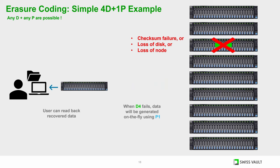The lost data chunk is automatically queued for regeneration. If the cause was a failed media, it is logged as failed and can be removed and replaced at a later time when convenient. This automated detection and compensation for hardware errors saves valuable operator time.